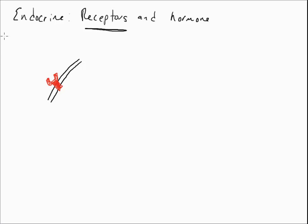If I draw a couple of hormones here, we can see maybe there's a round hormone — this could be luteinizing hormone, which causes ovulation to occur. But also in the blood, we may have a square-shaped hormone. I'm just trying to signify shape here. The square-shaped hormone will not bind to the receptor designed for the round hormone, whereas the round one can bind. So we have a specific receptor-hormone relationship.